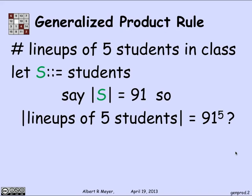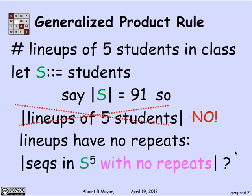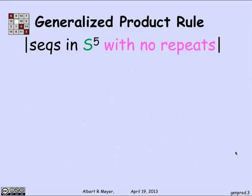And so the product rule would say take 91 to the fifth as the number of lineups of five students. And that would be correct if the same student could appear twice in line, but that of course is impossible with real students. So the lineups have no repeats, and what we're really counting is the number of those sequences of length five of students with no repeats. And the generalized product rule tells you quite straightforwardly how to count those.